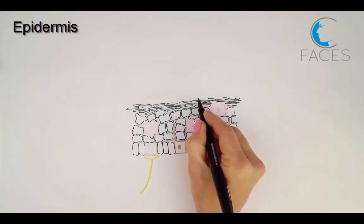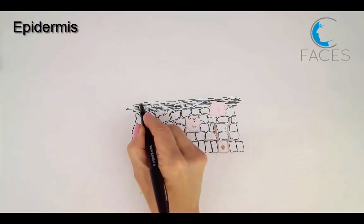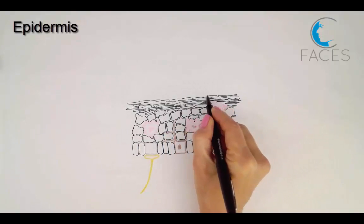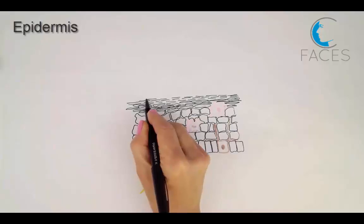The stratum corneum consists of 15-20 layers of squamous keratinized cells. These cells, called squames, are fully keratinized and continuously shed at the epidermal surface.